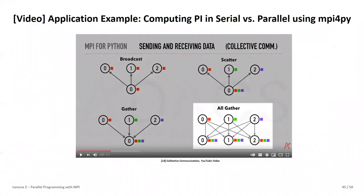Coming back to our lectures — that was a good short example of the motivation for using MPI. We saw the speedup from serial to parallel when computing PI. Obviously, the more computing power you add, the faster you go. However, we will also learn in subsequent lectures that there are limits to speedups — things like Amdahl's law — and we will elaborate more on parallelization theory and performance characteristics.